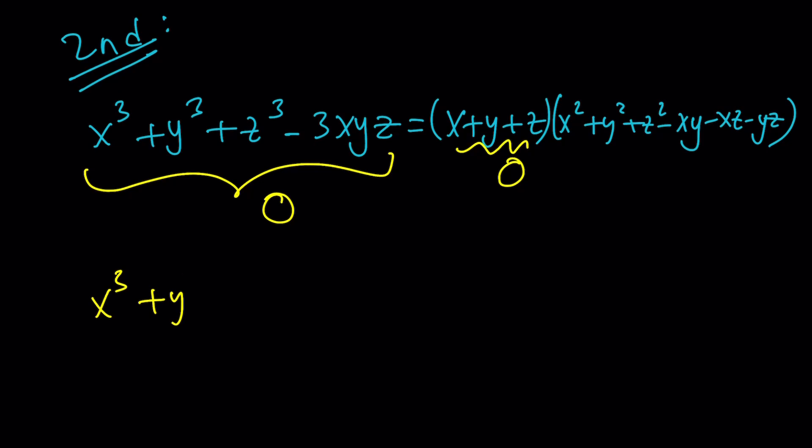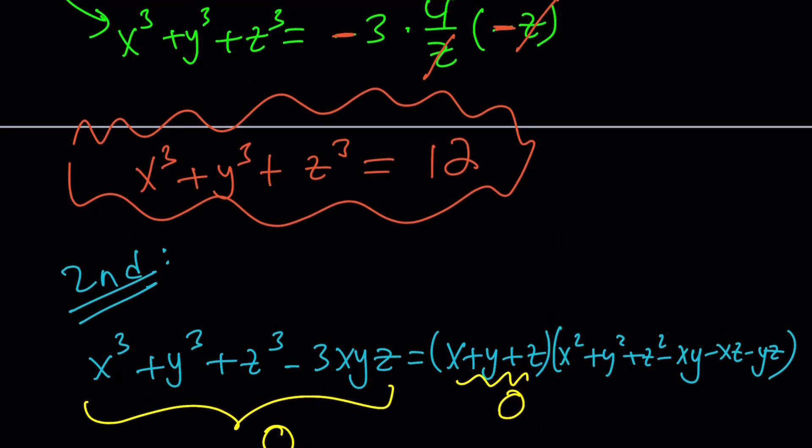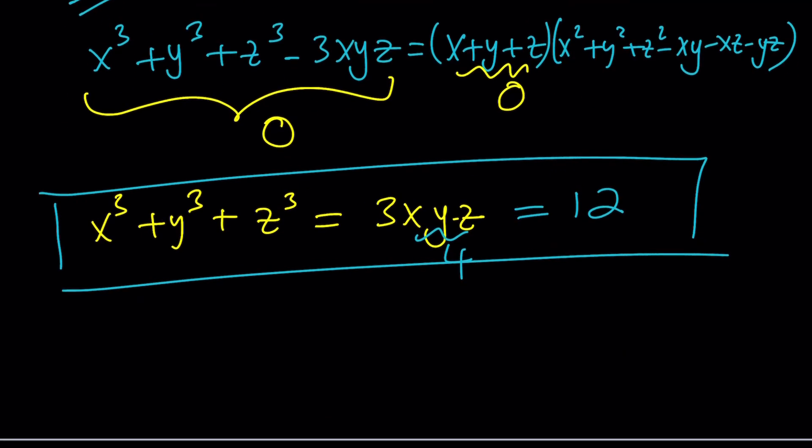So this whole thing becomes 0, which is interesting because this gives you the sum of the cubes. The sum of the cubes equals 3 times the product. But guess what? We know the product. xyz equals 4. And we're trying to evaluate the sum of the cubes, so we got what we wanted. It's 12. That's it. Done. Finished. So the answer is 12 again. Shouldn't be a surprise. So that's an identity that's very, very useful. Make sure to know that.